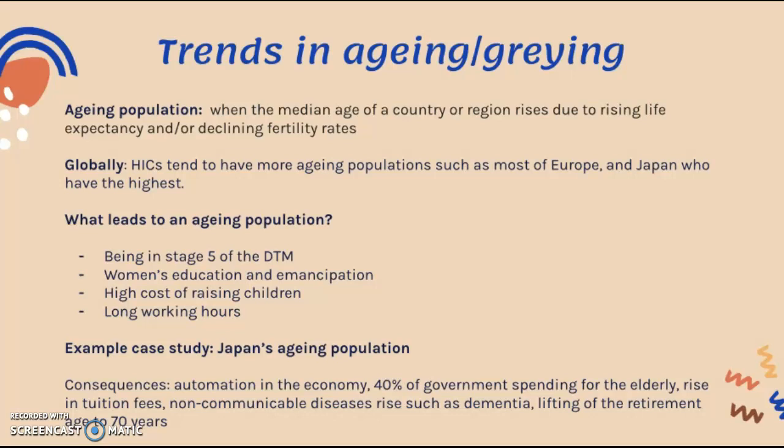An example case study here is Japan and its aging population. Due to Japan's very developed healthcare systems and economic development, life expectancy has increased significantly, leading to a large aging population. Consequences of this include automation in the economy, replacing human workers with robots and machinery, and 40% of government spending being allocated toward the elderly.